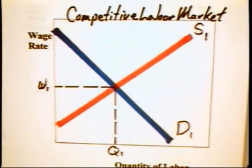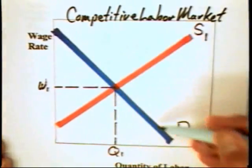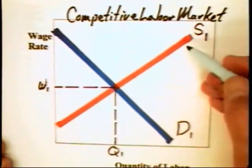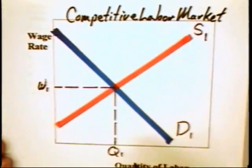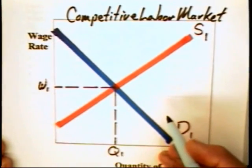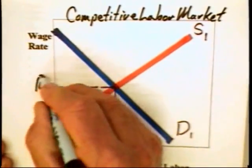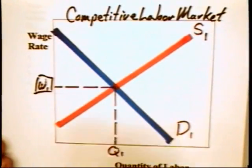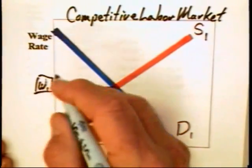This video module is going to be concerned with monopsony labor markets. In the past, we've dealt with labor markets in terms of their competitiveness — a labor market that has a downward-sloping demand curve, an upward-sloping supply curve, and there are many employers in the market demanding workers and many workers willing to offer their work. In such a fragmented labor market, the wage set by supply and demand can be viewed as a marginal cost of labor to individual employers.